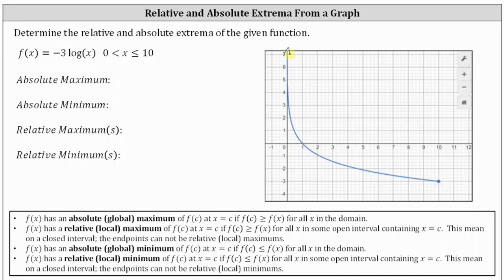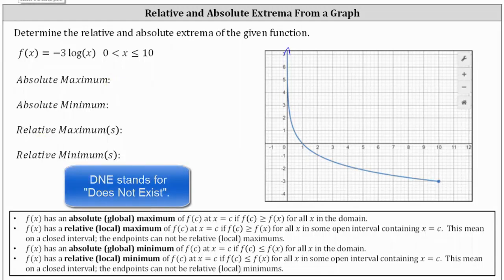So because we have a decreasing function and we have a vertical asymptote of x equals 0, where as we approach x equals 0, the function values increase without bound, we will not be able to identify any high points on the graph. And therefore, there is no absolute maximum or relative maximum. So let's go ahead and state DNE for the absolute maximum and the relative maximum.